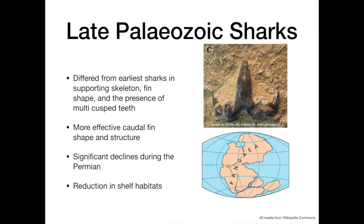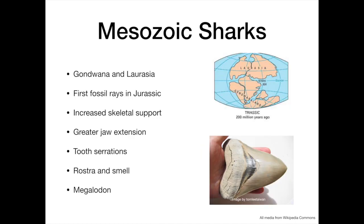The late Paleozoic sharks were more derived than their predecessors, in terms of both skeletal and fin shape, as well as the presence of multi-cusped teeth. Their more effective caudal fin shape and structure improved swimming efficiency. During the Permian, species diversity decreased significantly among the elasmobranchs, thought to be due to the formation of the supercontinent Pangaea, which would have significantly reduced shelf habitats. This changed in the Mesozoic when Pangaea separated into Laurasia and Gondwana, once again increasing shelf habitats and causing a corresponding increase in elasmobranch species diversity.